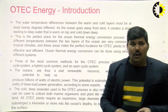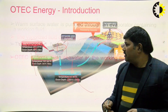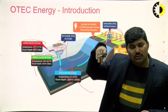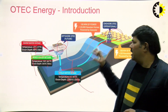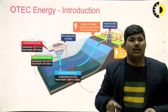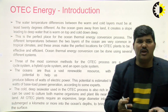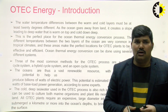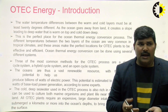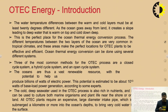When you go inside the ocean you can see the slope from the land going deeper. This is a perfect place for the ocean thermal energy conversion process, and the different temperatures between the two layers of the ocean are very common in tropical climates. These areas make the perfect location for an OTEC plant to be effective and efficient.